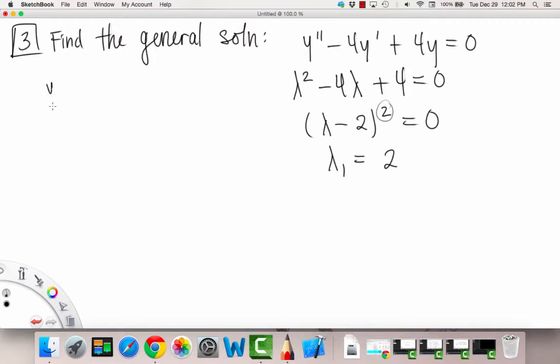So we get that our repeated root is lambda sub 1 is equal to 2. Okay, so that means we can construct our fundamental set of solutions by saying one of them is e to the 2t, and the other one is the same exact thing, except we're just going to add that t in front.